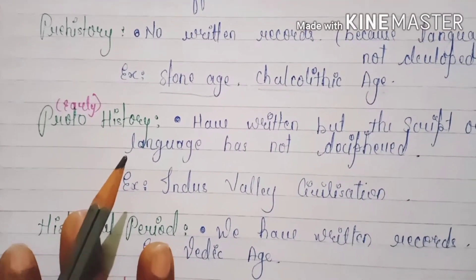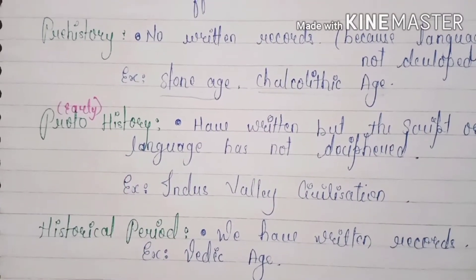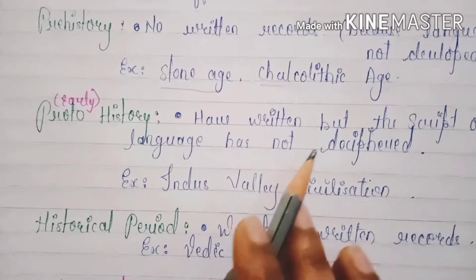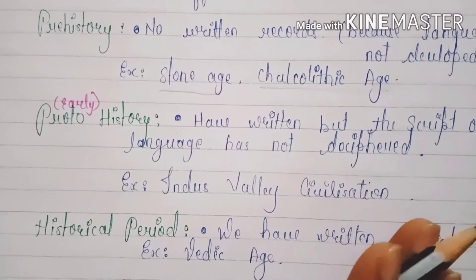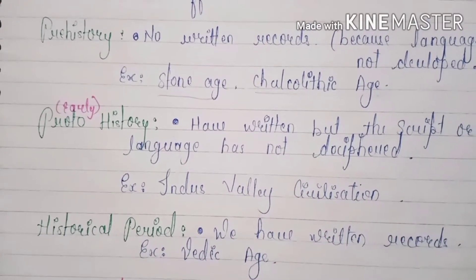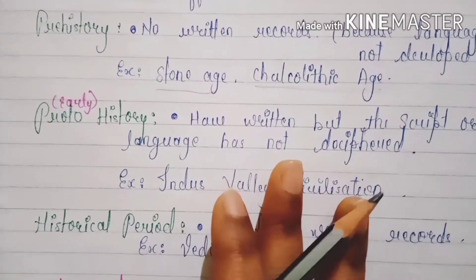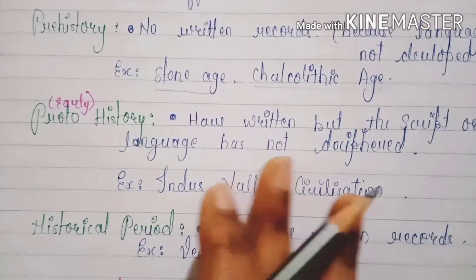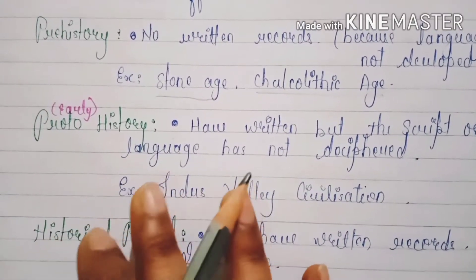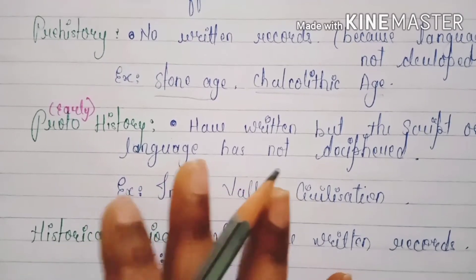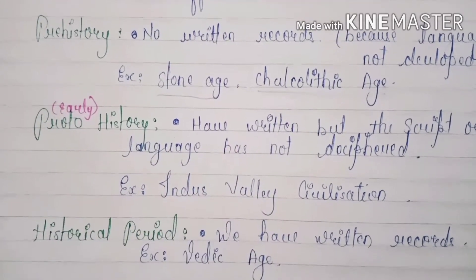Proto-history is the name of the early history. Script was developed but the language has not been deciphered — this means the script is developed but the language we have not understood, like in the Indus Valley Civilization.